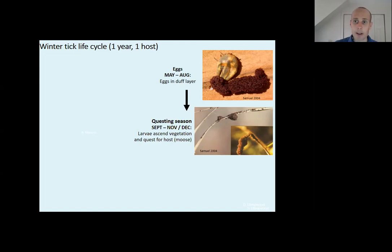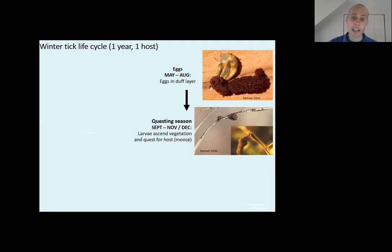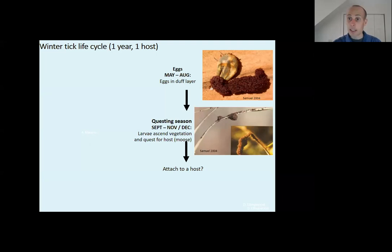I've actually sampled for winter ticks walking through clear cuts with a flannel sheet trying to encounter these ticks. At times I'll get a bunch on my pants, but never once have I had a larva try to embed on me. The adults will, but the larvae will not. These larvae are on the vegetation questing — if you get lasting snow or temperatures below freezing they die, but if not they continue searching for a host. In some cases they successfully find a host and stay on that moose all the way from October through to March or April.